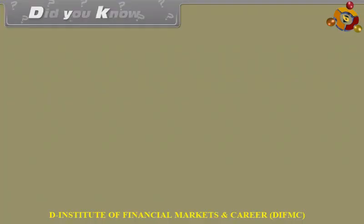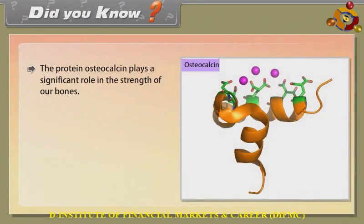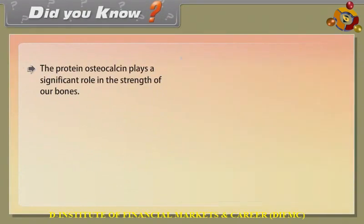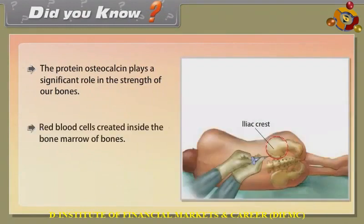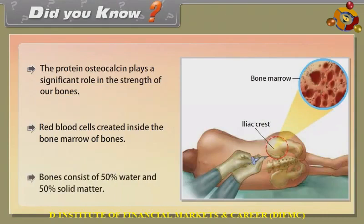Did you know? The protein osteocalcin plays a significant role in the strength of our bones. Red blood cells are created inside the bone marrow of bones. Bones consist of 50% water and 50% solid matter.